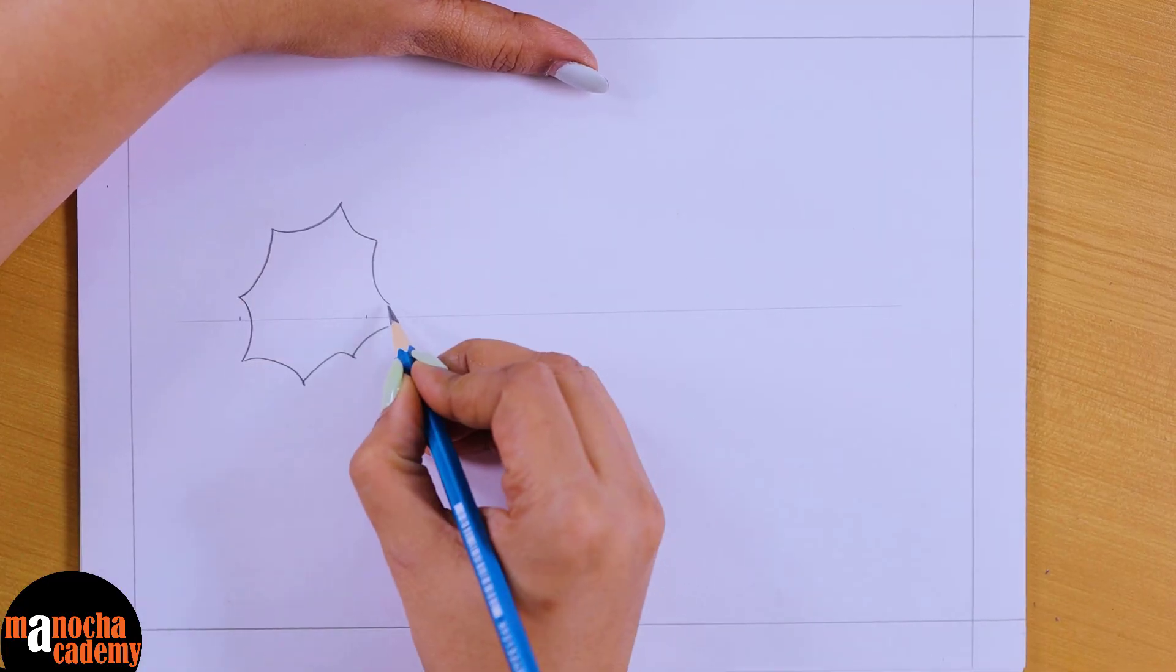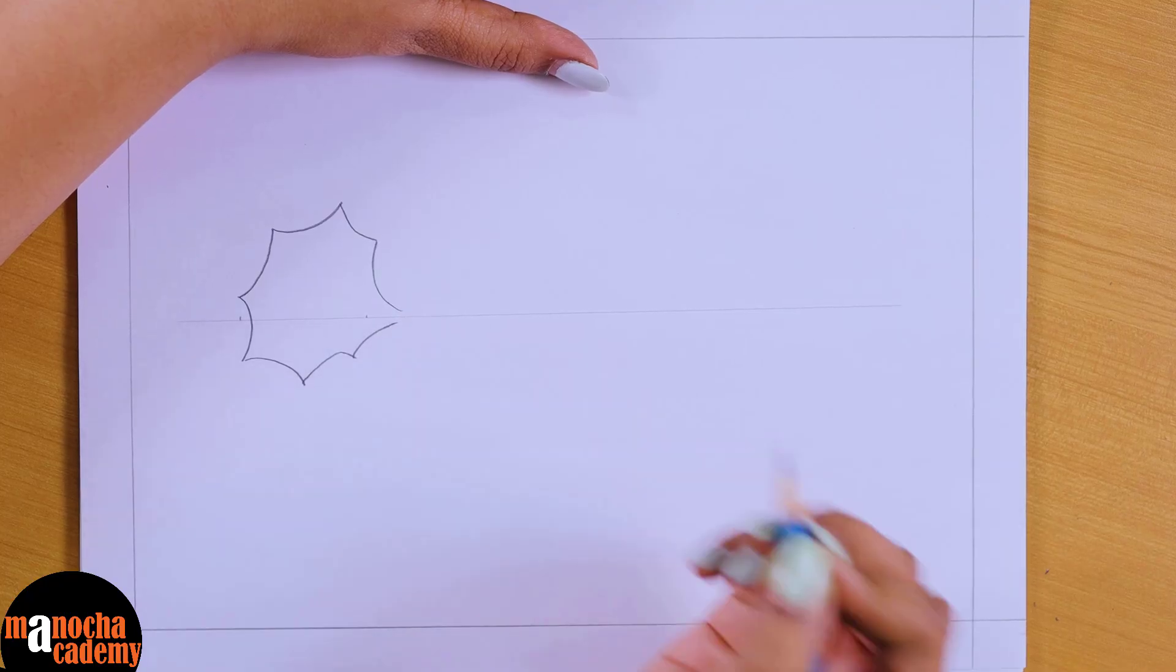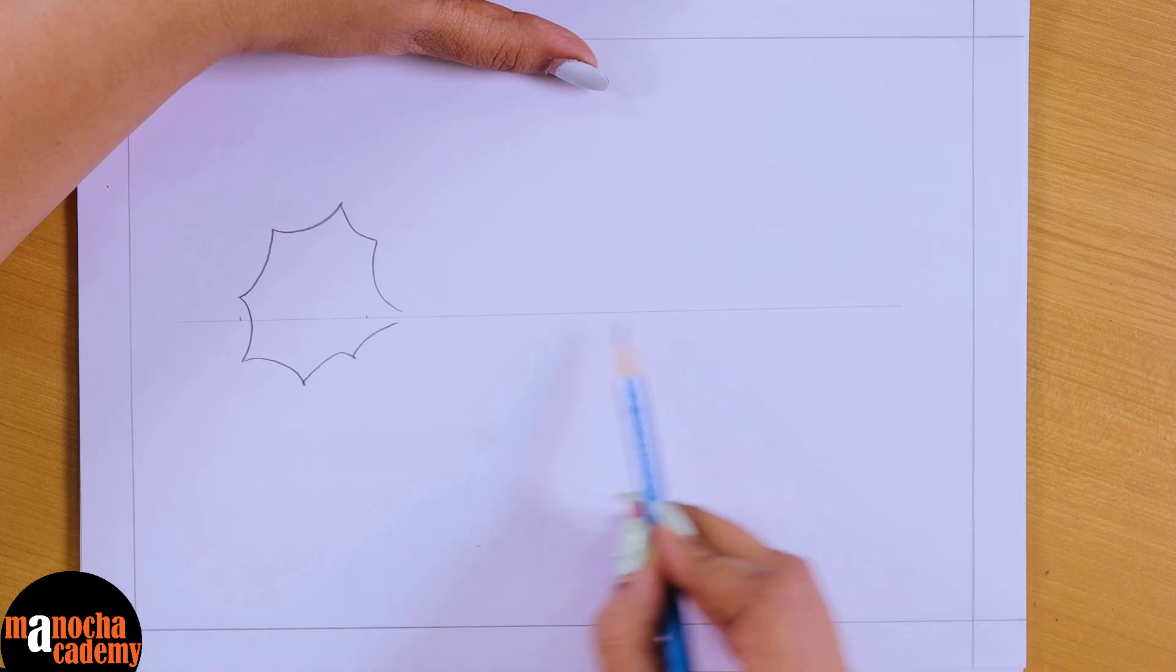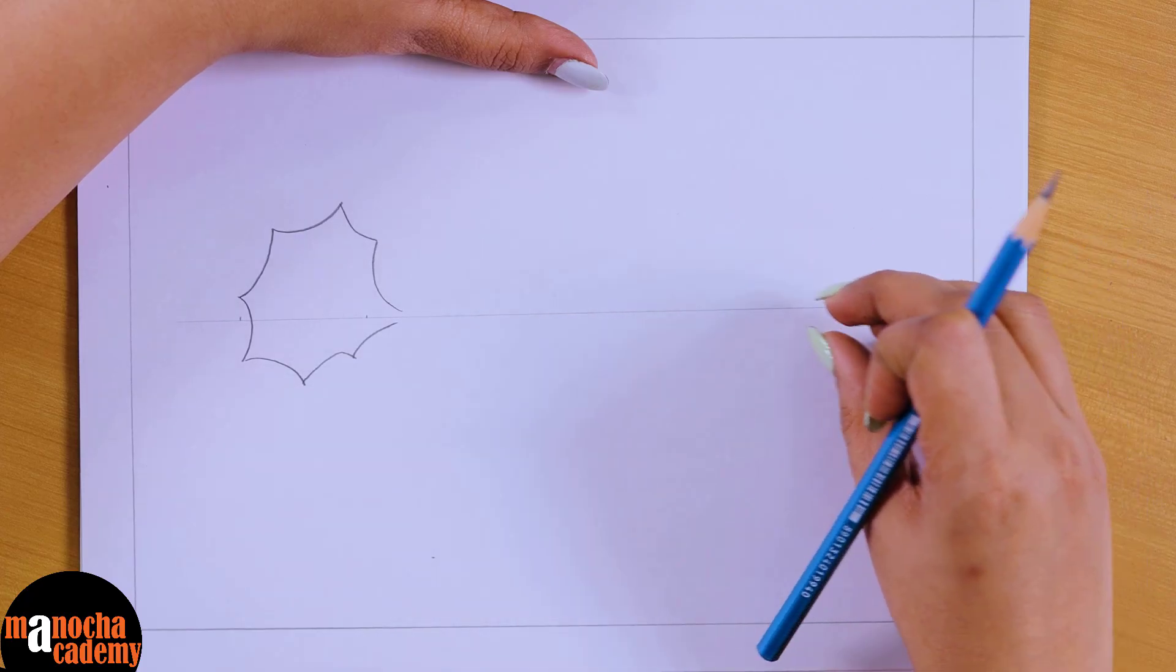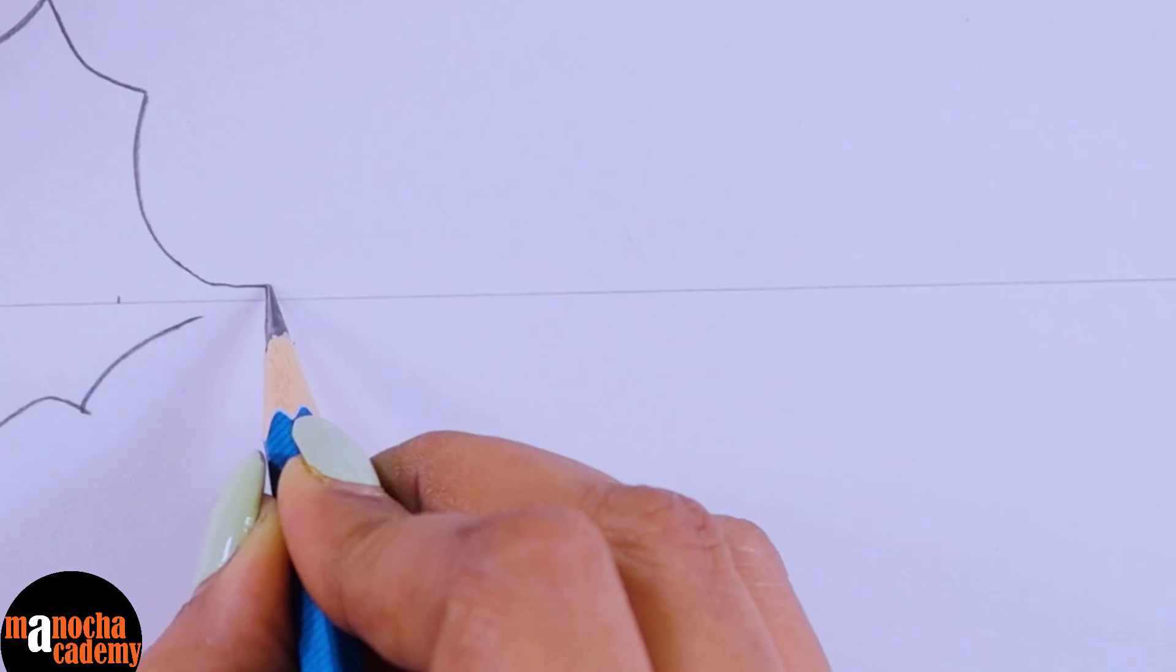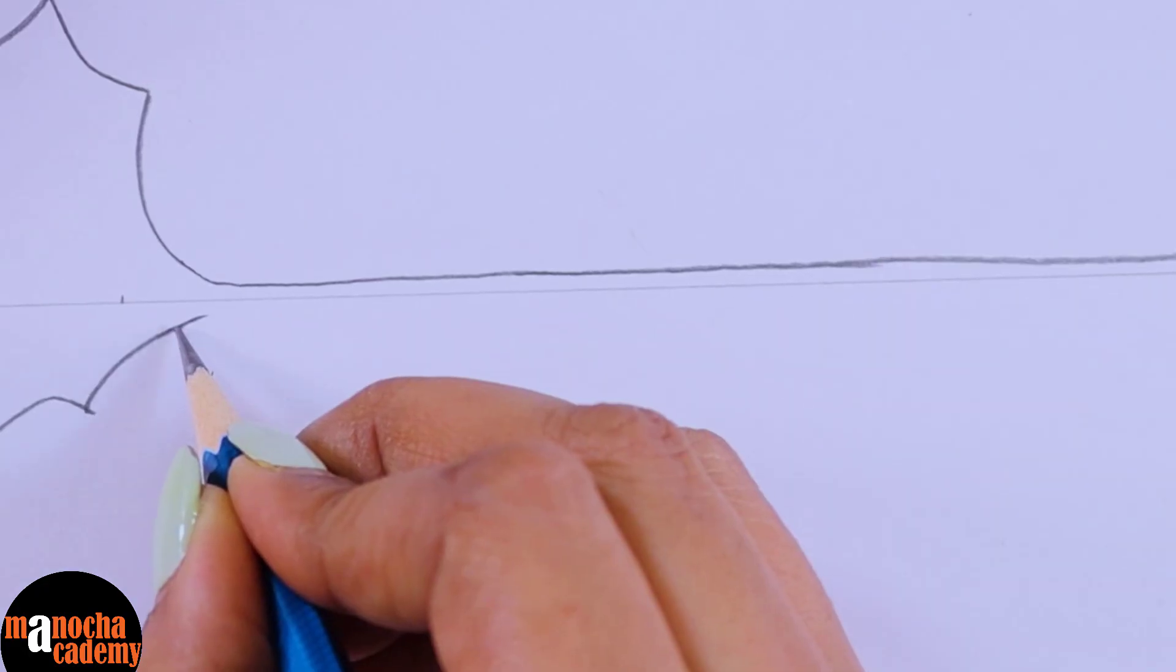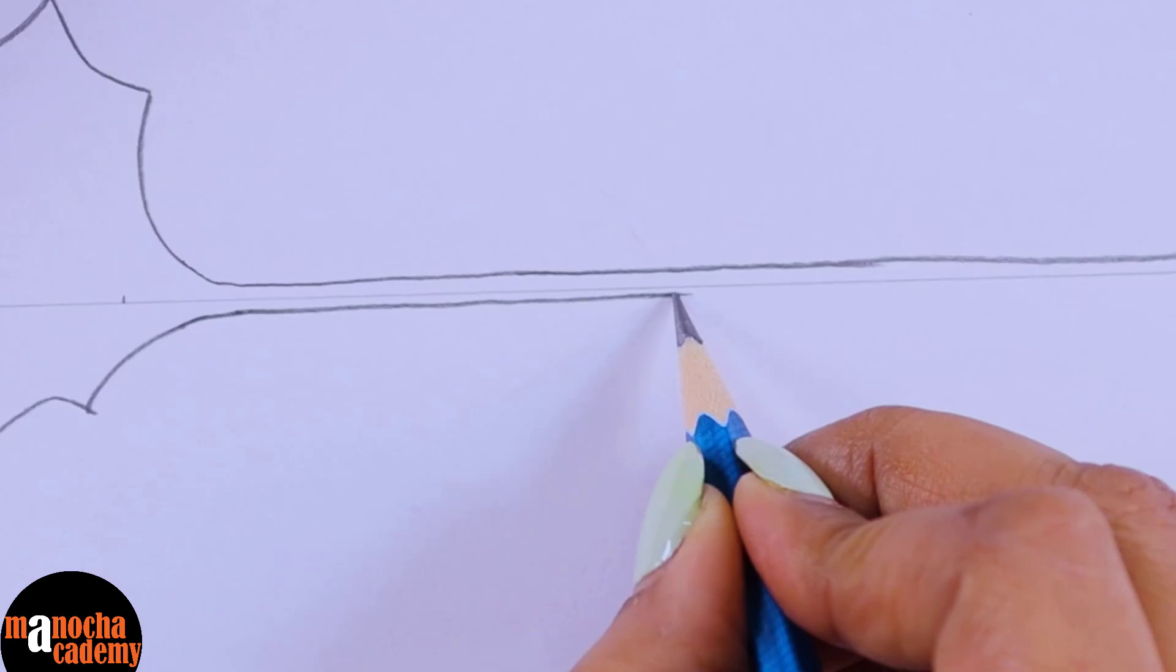Now for the structure of the neuron I have taken the page in landscape mode because there is a part that needs to be drawn which is elongated. You can obviously take it in a portrait mode. Now what I have to do is I will have to draw the axon, and the axon will go till the end. We have to make sure that when we are drawing this line, this line goes parallel to the central line you have drawn and the distance between these two lines remains the same all throughout.